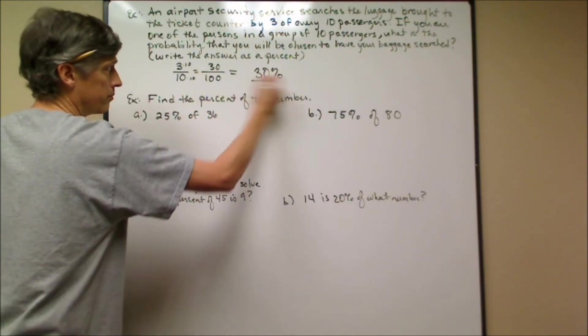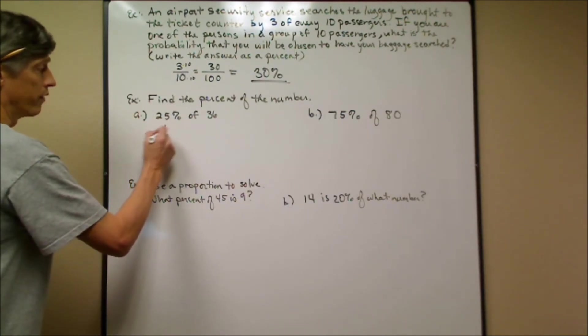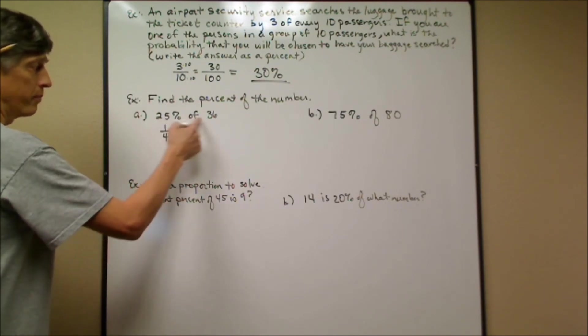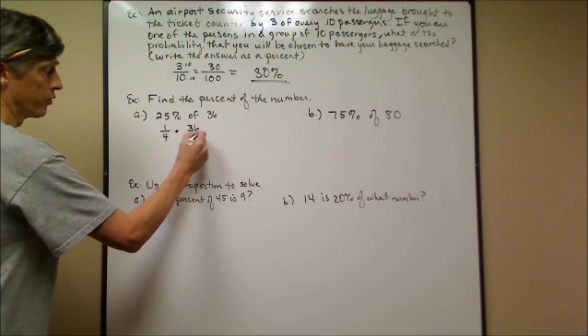Now we're going to change the problems just a little bit and work some problems where we're using percents or finding percents. I'm going to show you a couple different methods. The first method is a little bit more direct. I'm going to change 25% into a fraction. 25%—that's one of the ones I asked you to memorize—that's 1/4. 'Of' means times in this situation. 25% of 36 means 1/4 times 36, or 36 over 1.